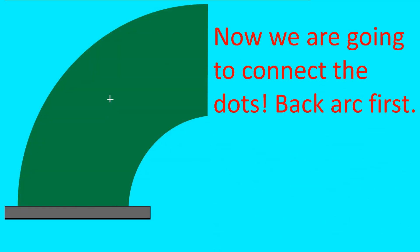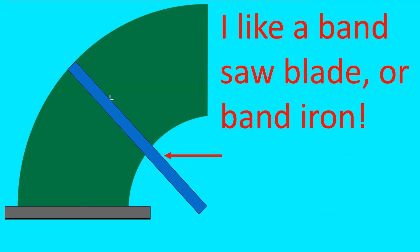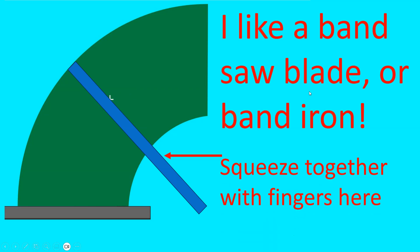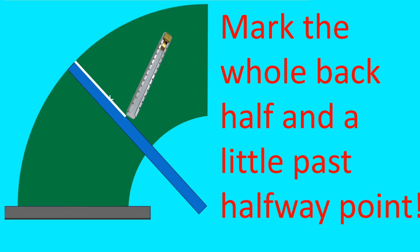Now we're going to connect the dots with the back arc first. I like to use a bandsaw blade or a piece of band iron. There's your bandsaw blade. Squeeze together with fingers here. Notice the position of blade points to the vertex of that fitting. Mark the whole back half and a little past the halfway point.